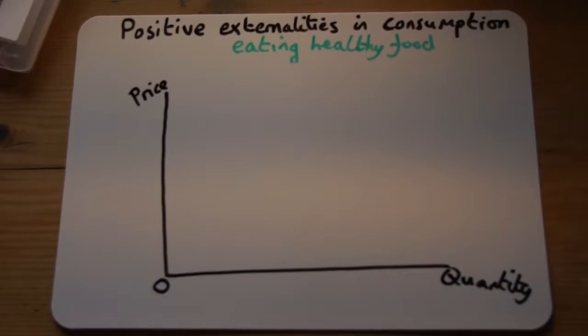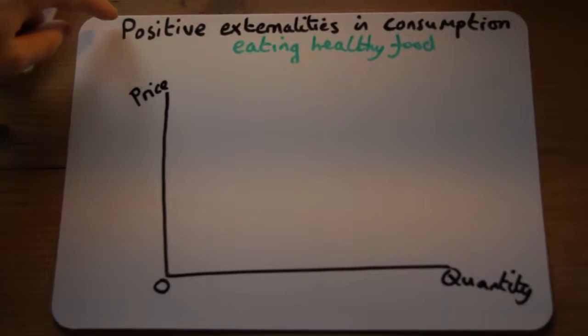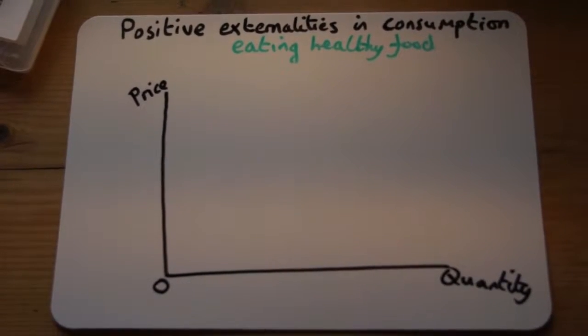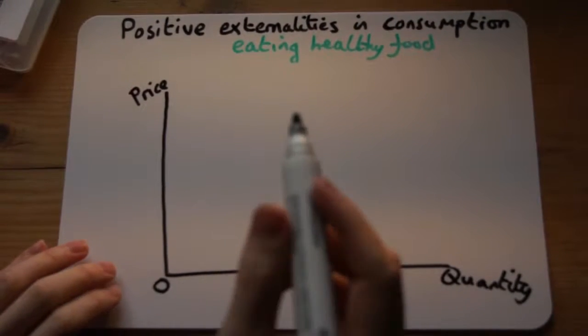This is a how-to guide on drawing positive externalities in consumption, and the example we're going to use is eating healthy food.